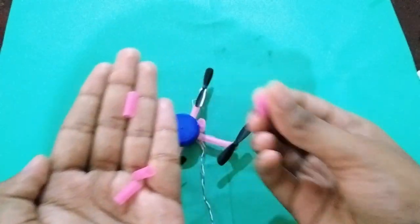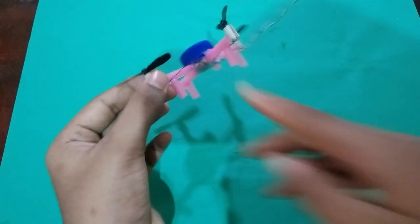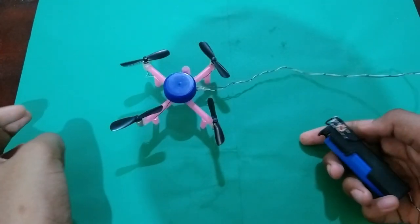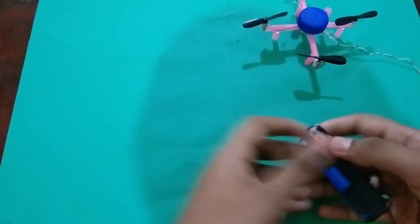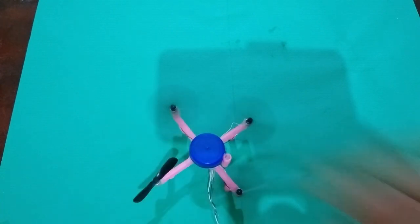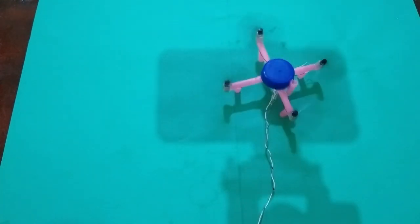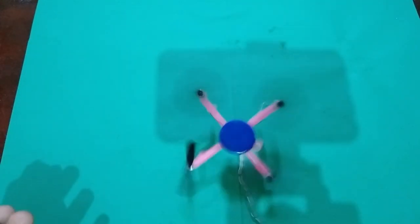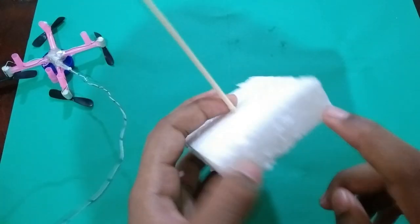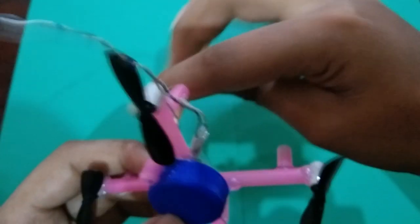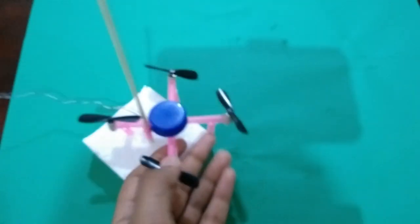We add the straws and attach the bottle cap to it. We put the straw in and add the strings. We will use bamboo sticks. Now we have a bamboo stick in a thermocol base. Now we are going to connect the lithium battery.